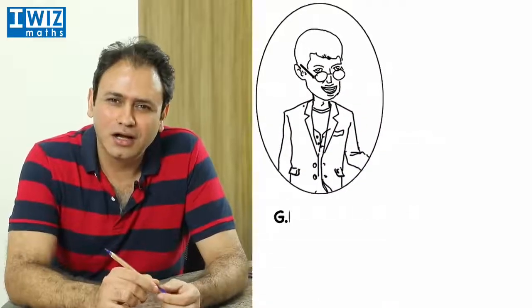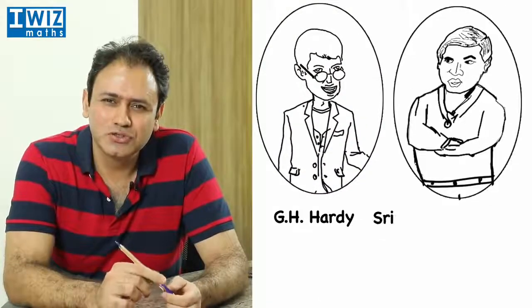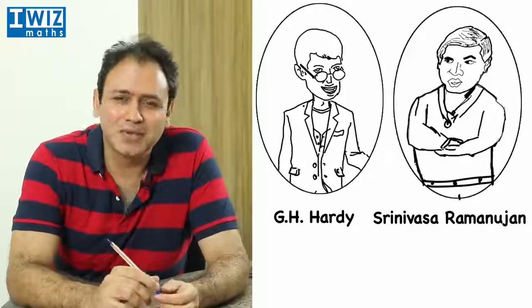So I'll tell you a true story. This is a story about two mathematicians. One was G.H. Hardy, an Englishman, and the other was Srinivasa Ramanujan, a very famous Indian mathematician.